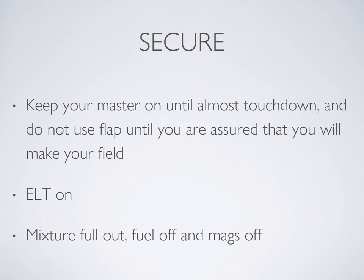Before you secure your engine and proceed to landing, pull out the emergency checklist and go through it one last time to make sure you didn't miss anything — especially on your flight test, because if you don't, you'll lose points. If you've covered all the points and have to land in the field, leave your master on until last and do not use flap until you're assured you're going to make your field. An engine-off gliding descent profile becomes quite steep once you bring in flap, and you don't want to do that if you're not sure you'll make the field.